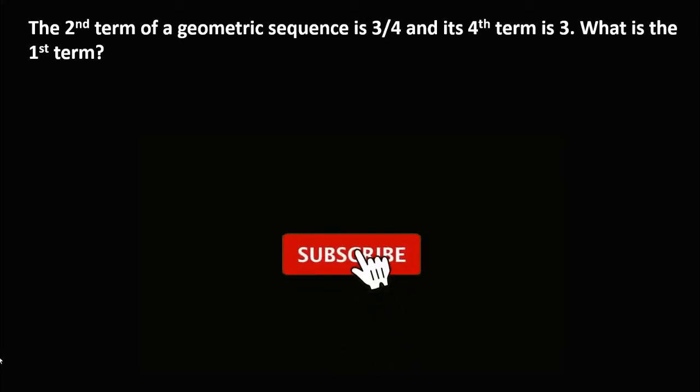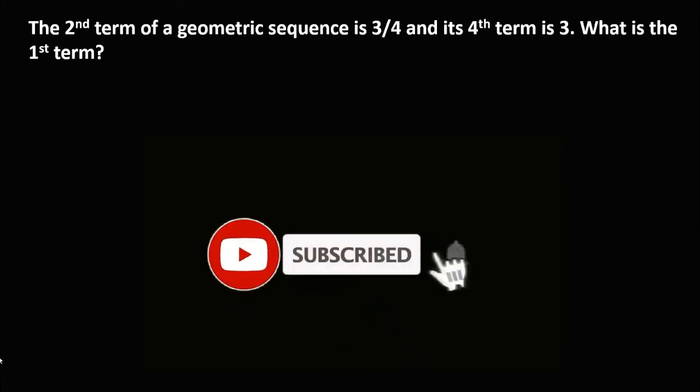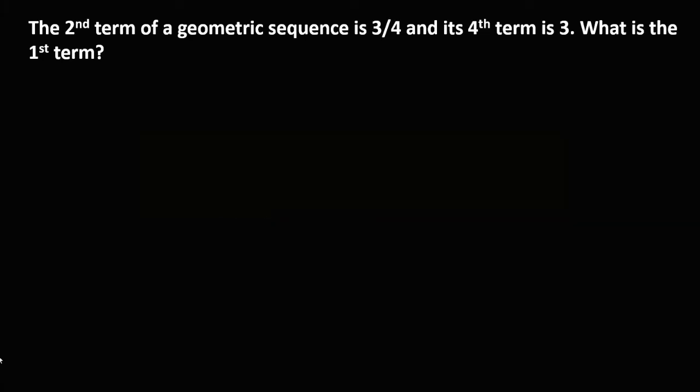Okay, so let's solve this problem. The second term of a geometric sequence is 3 over 4 and its fourth term is 3. So what is the first term?